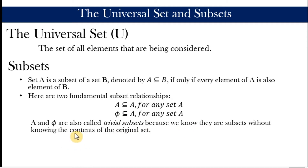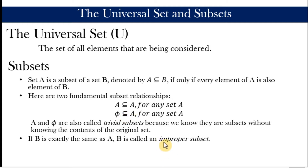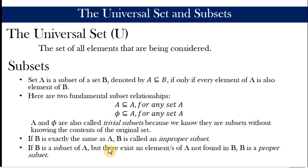These are called trivial subsets because we know they are subsets without actually knowing the content of the original set. Another concept is the improper subset: if B is exactly the same as A, B is called an improper subset. All other subsets that are not improper are called proper subsets.